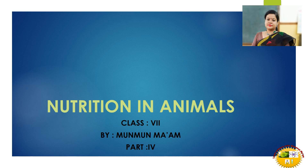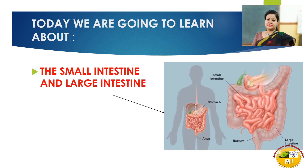Hello dear students, welcome back to my science class. Today we are going to continue with the chapter nutrition in animals, and this is part 4. Today we are going to learn about the small intestine and large intestine. In our previous video, we discussed the 5 steps of nutrition and the role of mouth, esophagus, and stomach in nutrition. So let's begin.